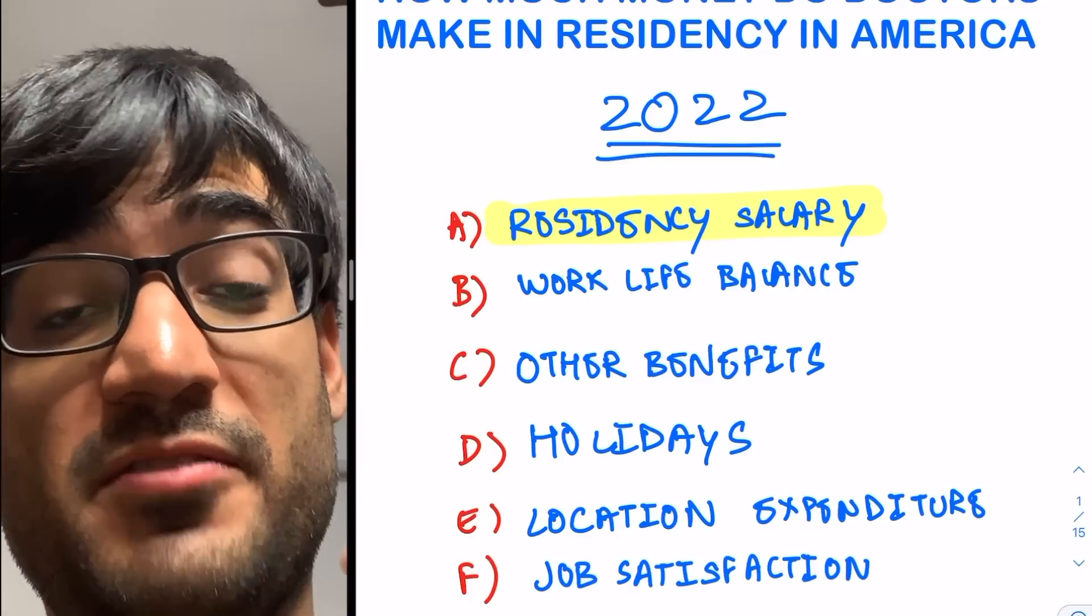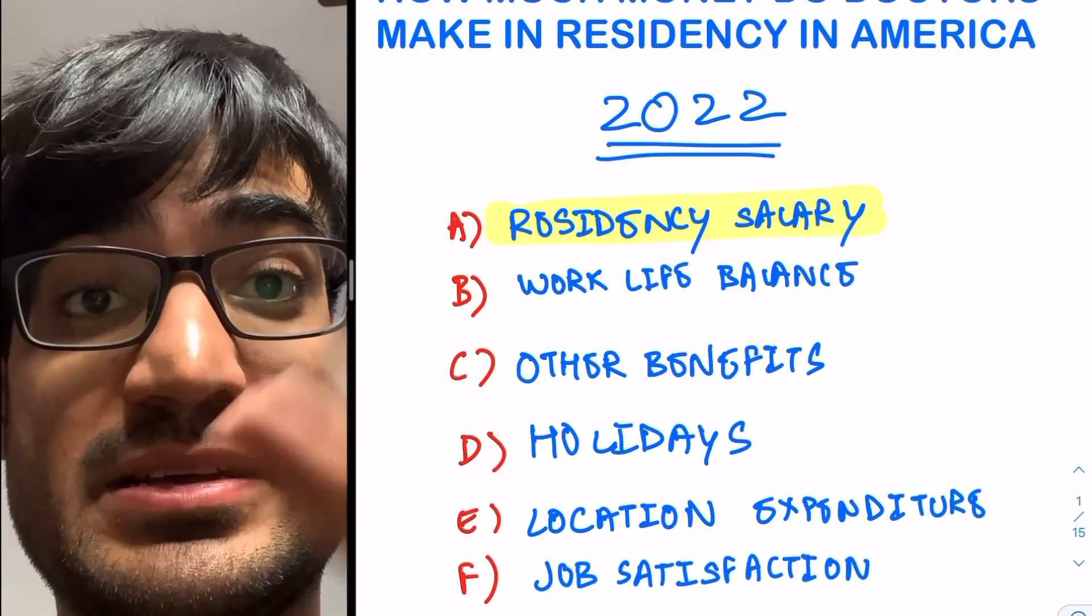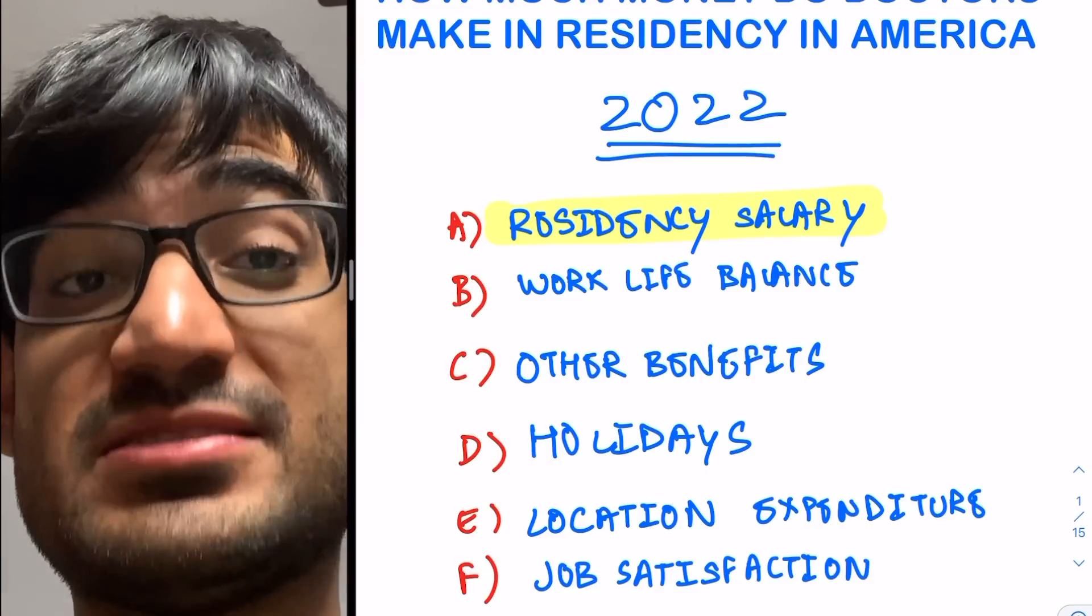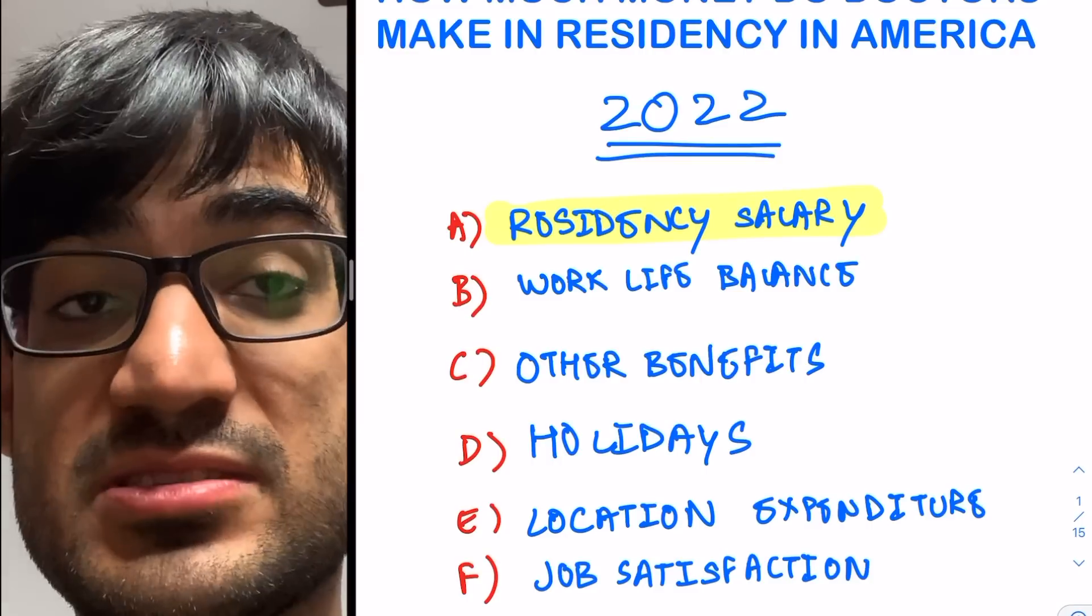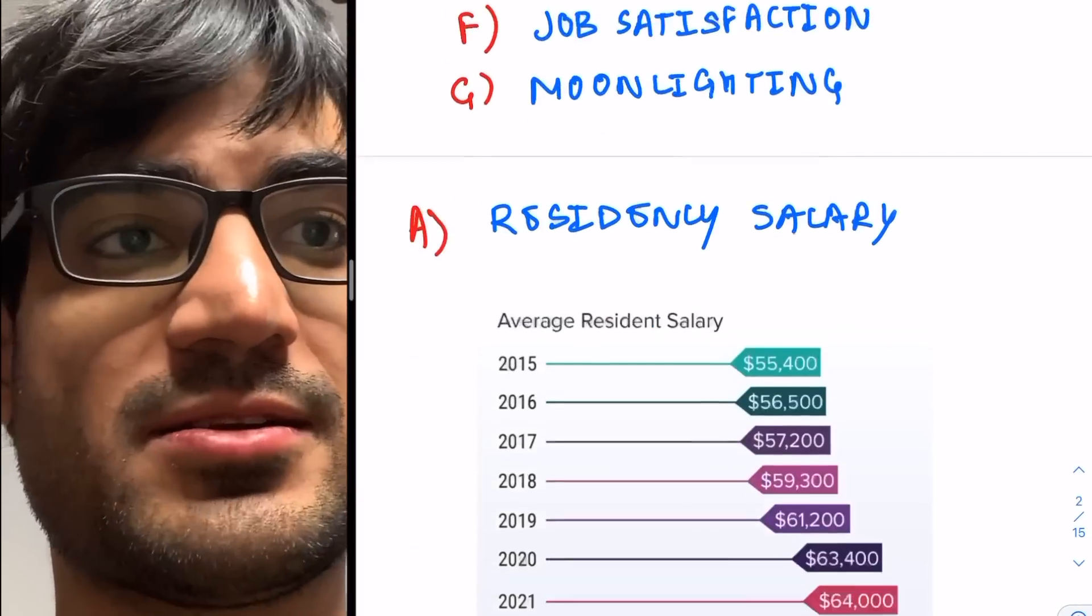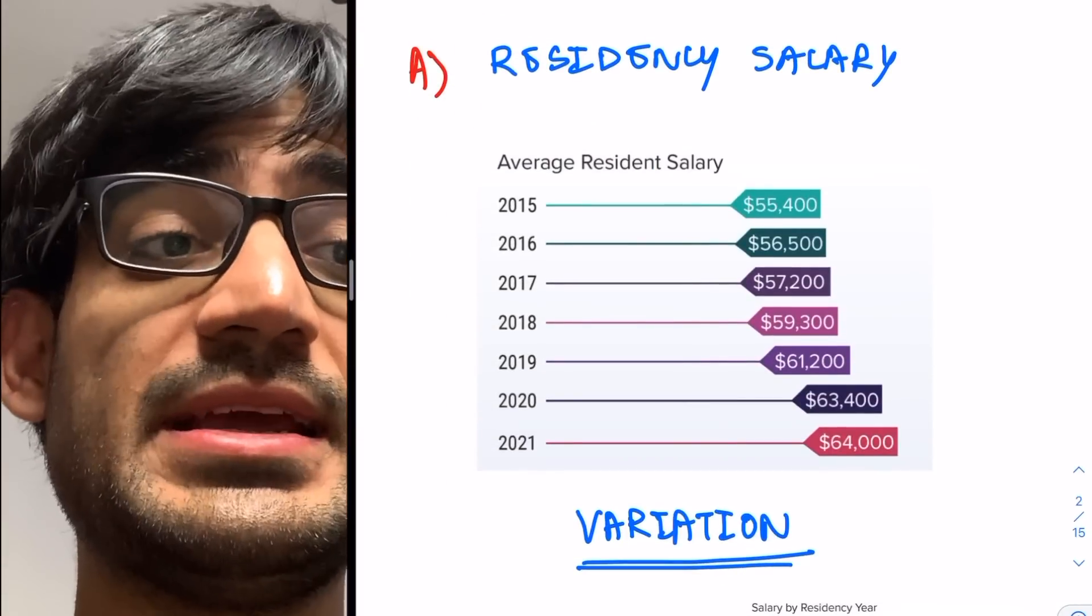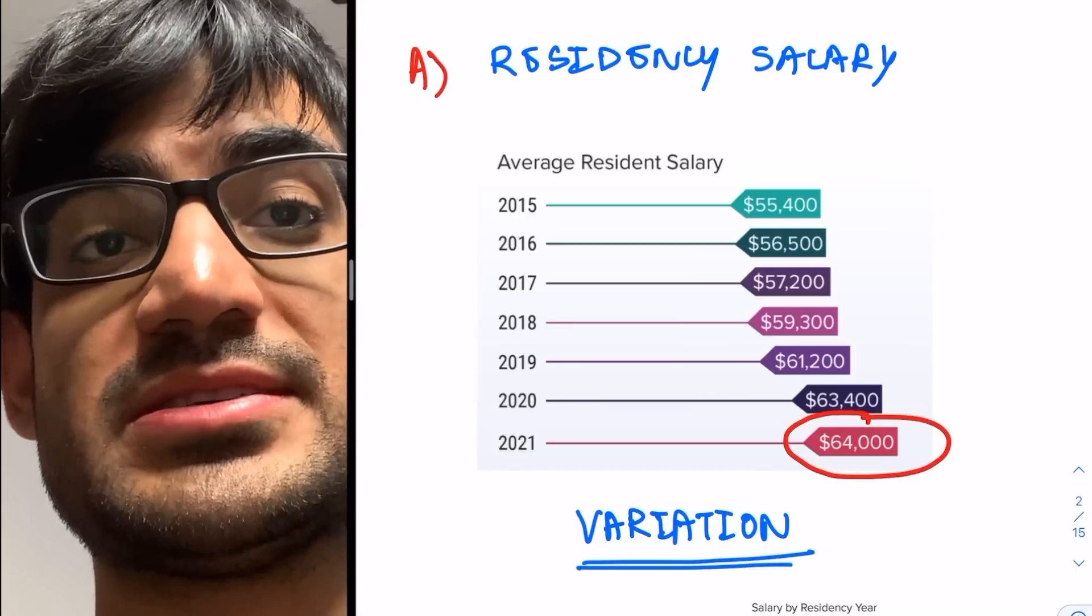Please note that all of the data that I'm going to present is from a survey by Medscape, which they gave to resident doctors all over America, and all of them filled it anonymously. First, let's go into residency salary. The average residency salary currently is about $64,000 as of 2021.